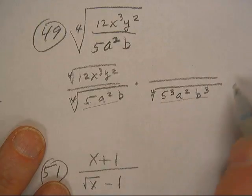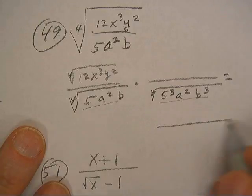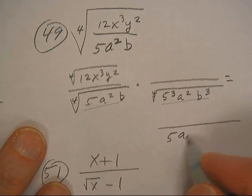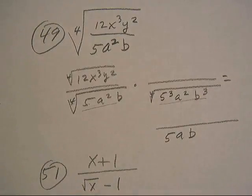And then my denominator will be down here, my final answer I'll have 5ab as my denominator.